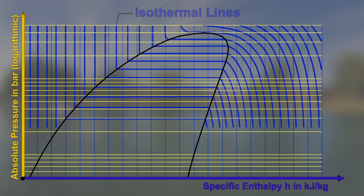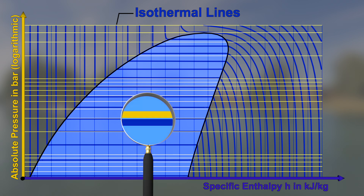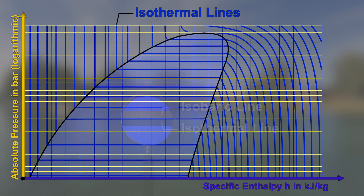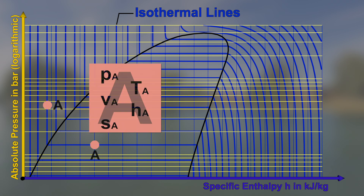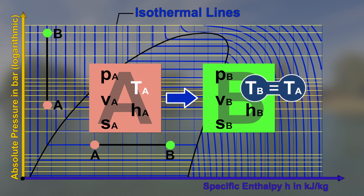If points with the same temperature are connected with each other, the isothermal lines become visible. In the two-phase domain of a pure substance, the isothermal lines are horizontal and run parallel to the isobaric lines. This means that in the two-phase domain, for example during evaporation or condensation, pressure and temperature are coupled with each other. If a state of a fluid changes from state A at constant temperature T along an isothermal line to state B, we call it an isothermal change of state.